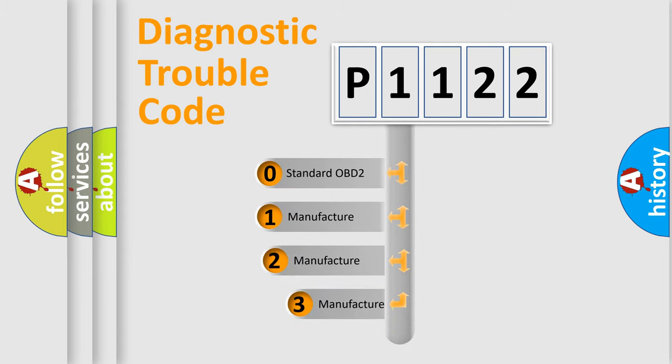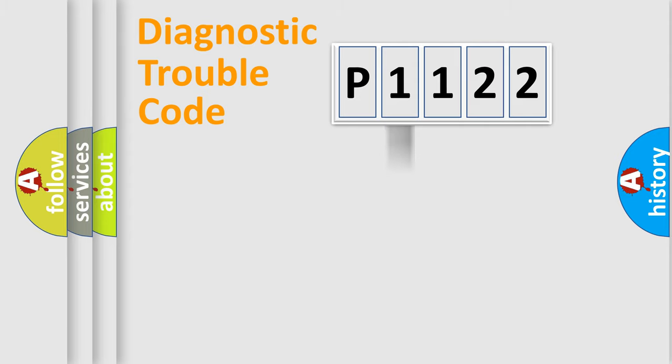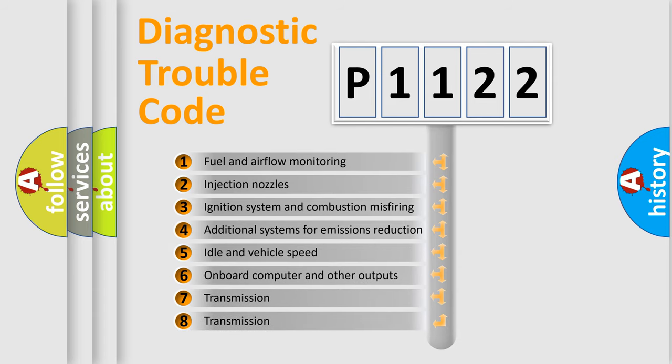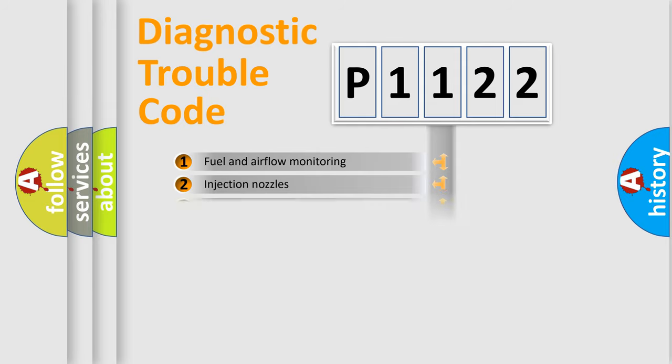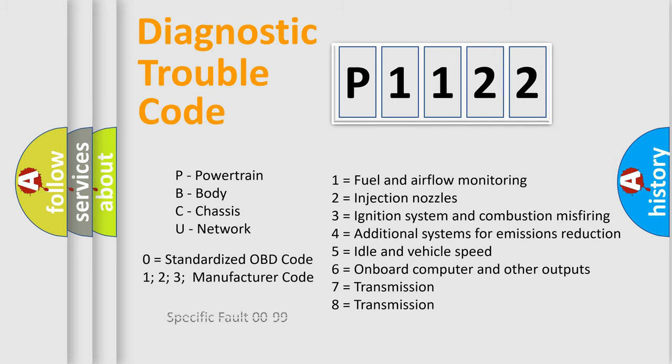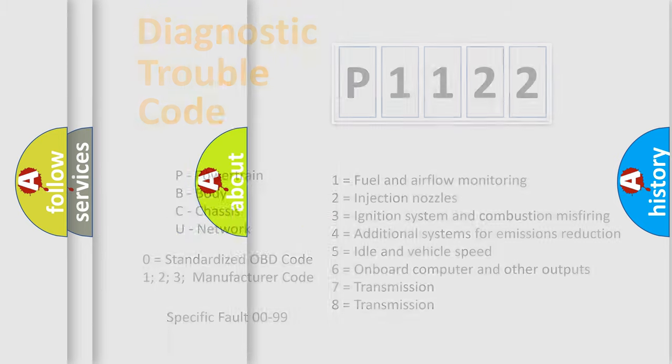If the second character is expressed as zero, it is a standardized error. In the case of numbers 1, 2, 3, it is a more prestigious expression of the car-specific error. The third character specifies a subset of errors. The distribution shown is valid only for the standardized DTC code. Only the last two characters define the specific fault of the group. Let's not forget that such a division is valid only if the other character code is expressed by the number zero.